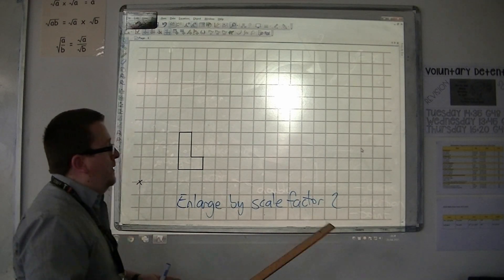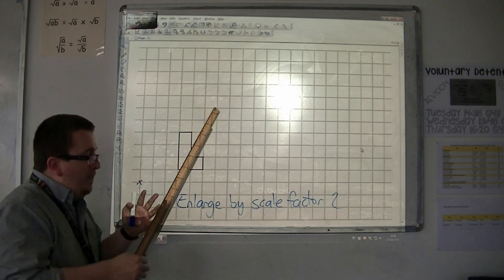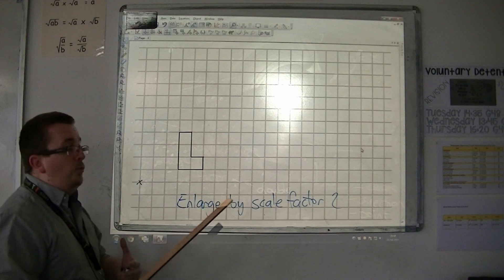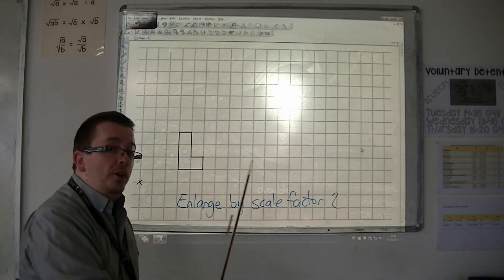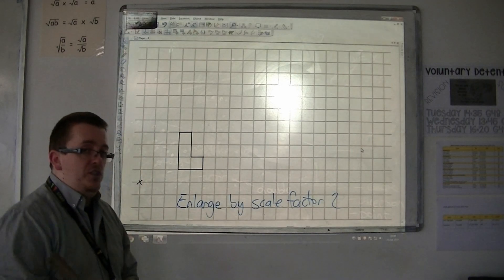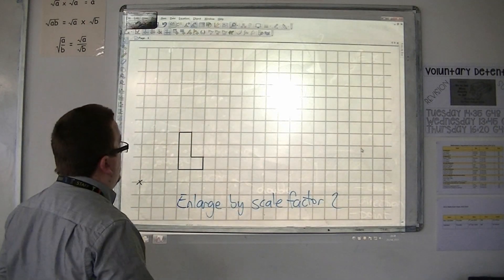What you should do is, depending on who teaches you, some teachers like to do this with you drawing a line through every single corner of the shape. I don't think you really need to do that. I tend to just use two.